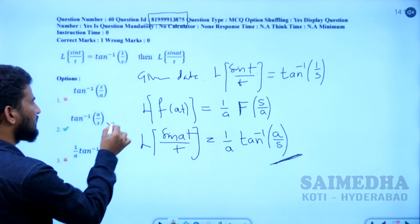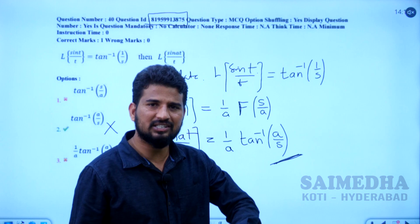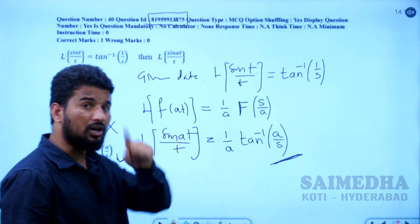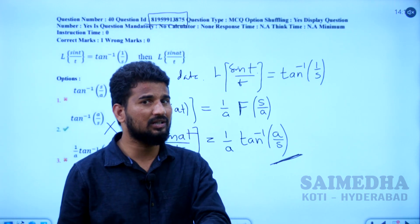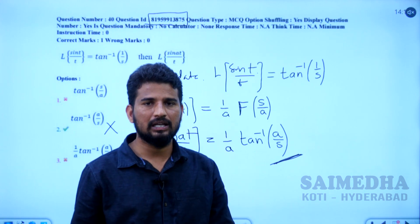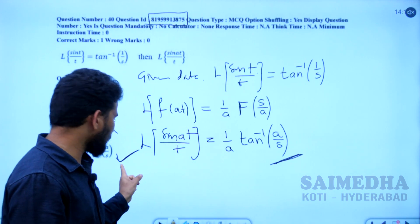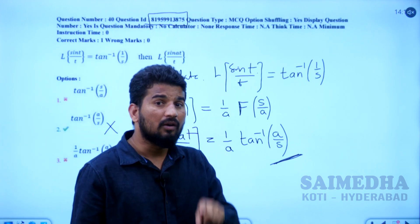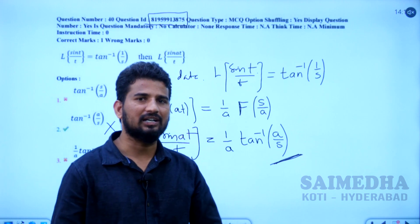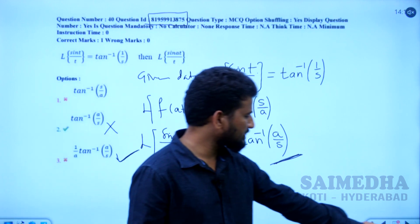tan⁻¹(a/s) is not a correct answer by itself — the correct answer is (1/a)·tan⁻¹(a/s). The right option was the third option, but it was marked as a different option. While submitting the key objection, you need to mention wrong answer and state that the third option is correct. You need to give the explanation by writing all this. Let us go ahead with the next question.